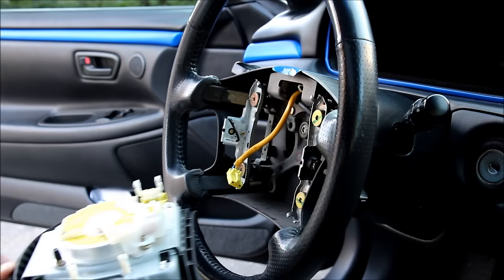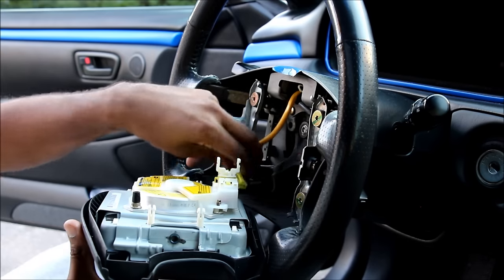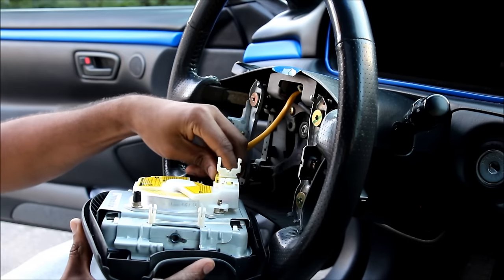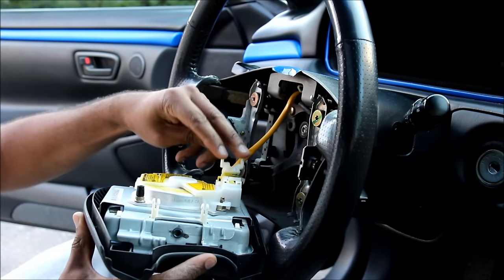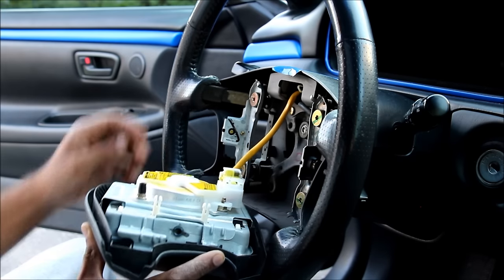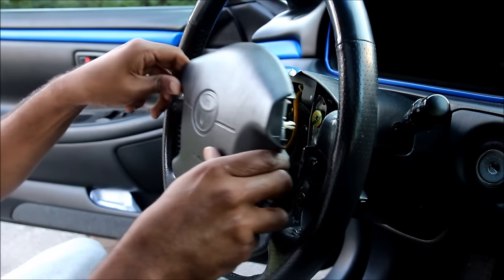And straighten the steering wheel again. Next we're going to bring in the airbag and connect the airbag wire. Put the white connector down and then reinstall the airbag into the steering wheel.